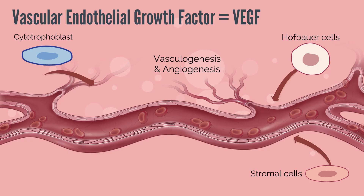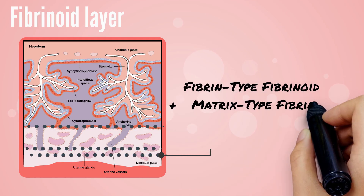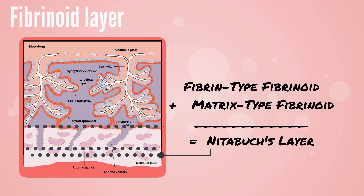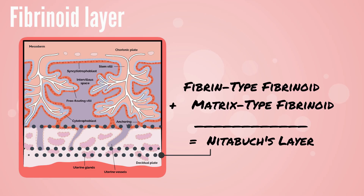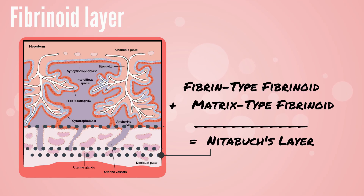Vascular endothelial growth factor, or VEGF, drives two main phases of development in pregnancy. Initially, the cytotrophoblast is the cellular stimulus to vasculogenesis and angiogenesis. Later, the Hofbauer cells — placental macrophages of mesenchymal origin — and stromal cells take over the stimulation of blood vessel development. The fibrinoid layer exists in two forms within the extracellular matrix: fibrin-type fibrinoid, a maternal blood clotting product which replaces degenerating syncytial trophoblasts, and matrix-type fibrinoid, secreted by invasive extravillous trophoblastic cells. The fibrinoid layer, or Nitabuch's layer, is thought to prevent excessively deep implantation, and loss of this layer may lead to abnormal placentation invasion.